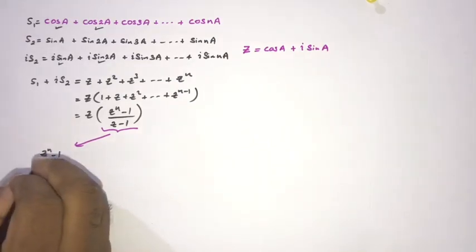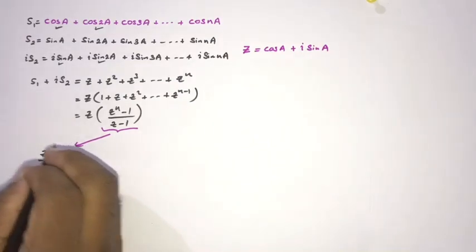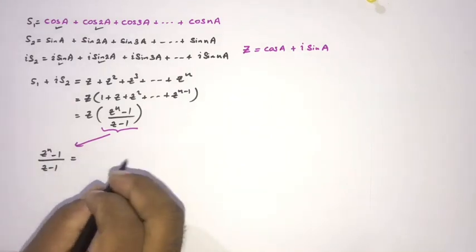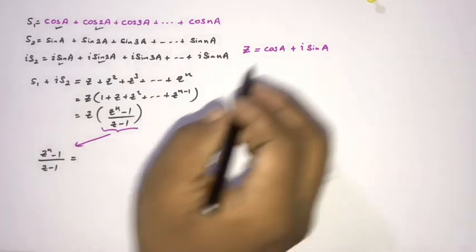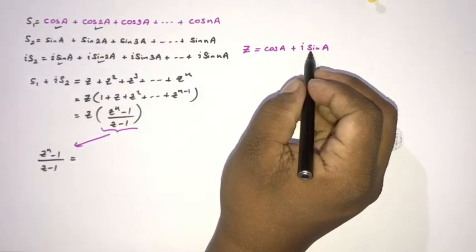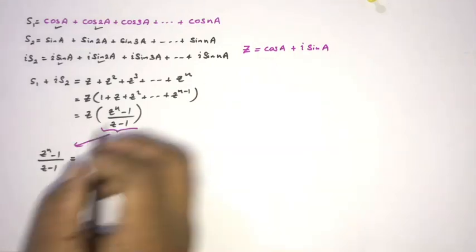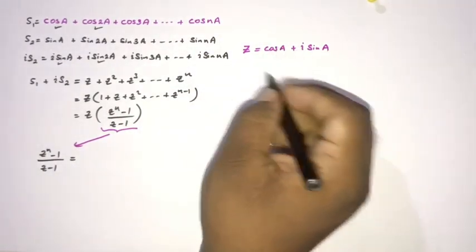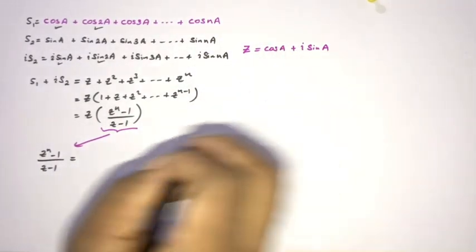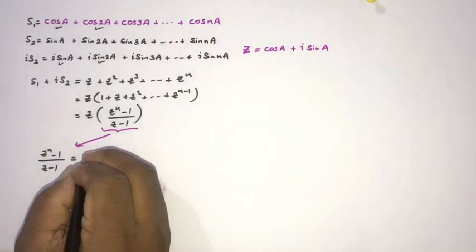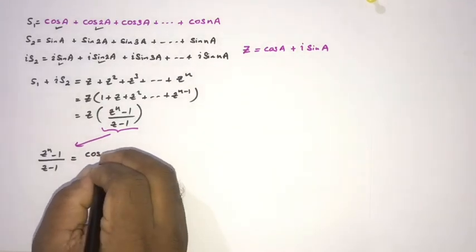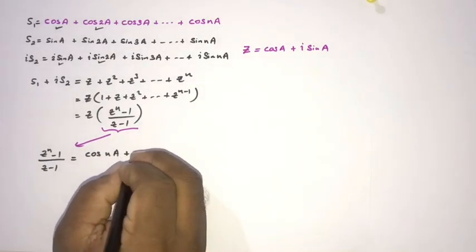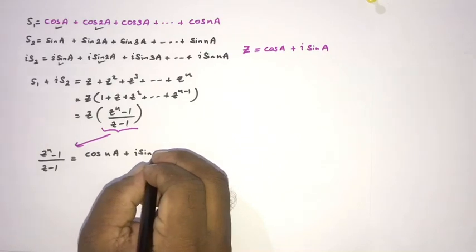Now if we consider this expression, we can write (c^n - 1)/(c - 1). We know c = cos(a) + i·sin(a), so by De Moivre's theorem c^n = cos(na) + i·sin(na).